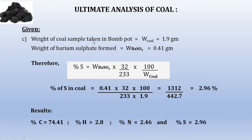Using the third observation: weight of coal sample used in the bomb calorimeter experiment = 1.9 g; weight of barium sulfate formed = 0.41 g. Percentage sulfur = 0.41 × (32/233) × (100/1.9) = 2.96. All results of this numerical — the percentages of C, H, N and S — have now been calculated.